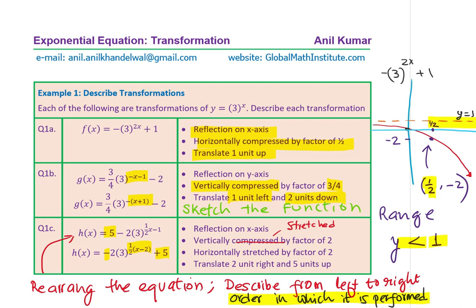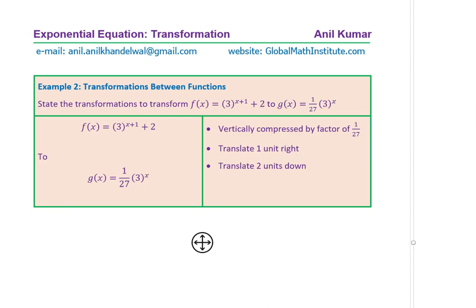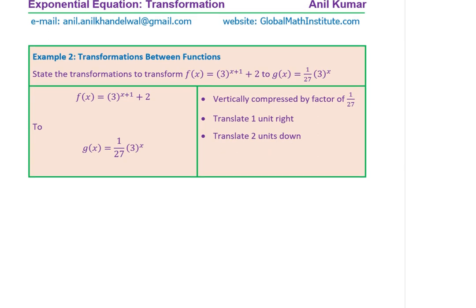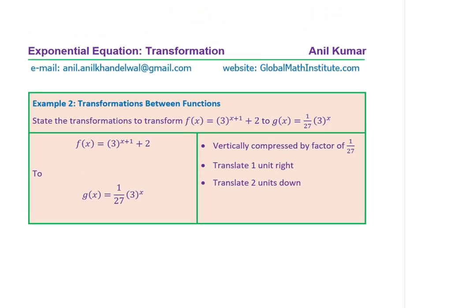Now let's move on to the second type of question, which is very popular in this topic — where we are not using a parent function, but we have transformation from one function to another. The question says: state the transformations to transform f(x) equals 3 to the power of x plus 1, plus 2, to g(x) which equals (1/27) times 3 to the power of x. The strategy is to write both functions and see how you can go from one to the other.